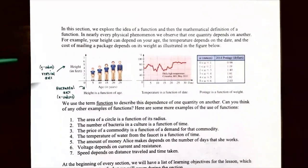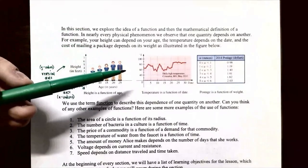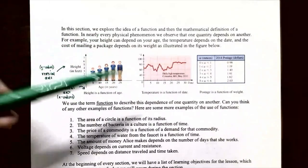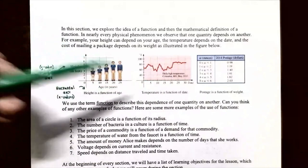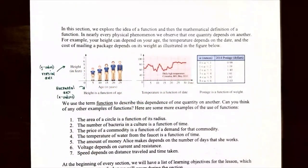Here are some examples of height depending on age. In the first graph, the age is on the horizontal axis — those are x values in years — and your height is on the vertical axis, the y axis, in feet. The middle graph shows temperature in Columbia, Missouri in May 2010, with dates on the horizontal axis and temperature in degrees Fahrenheit on the vertical axis. We also have the weight of a package in ounces and its mailing cost in 2014. A function describes the dependence of one quantity on another.